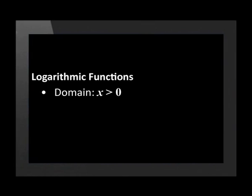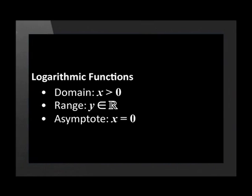There are some other properties we should know about in logarithmic functions. The domain of a logarithmic function is all positive real numbers. It is never 0 or negative. The range of the logarithmic function is all real numbers. And x = 0, otherwise known as the y-axis, is the asymptote of the logarithmic function.